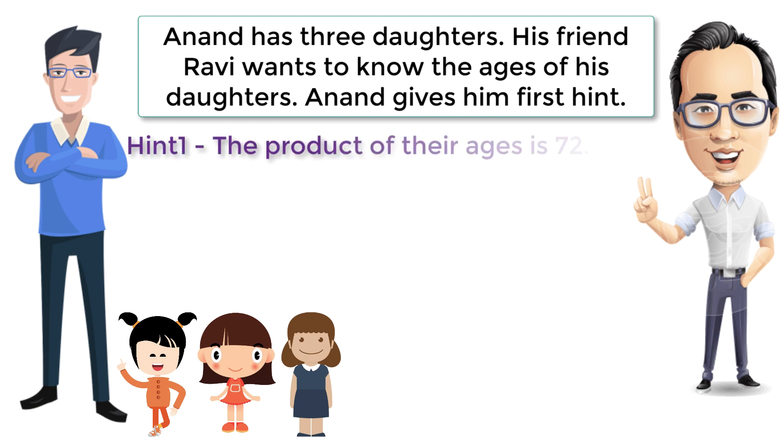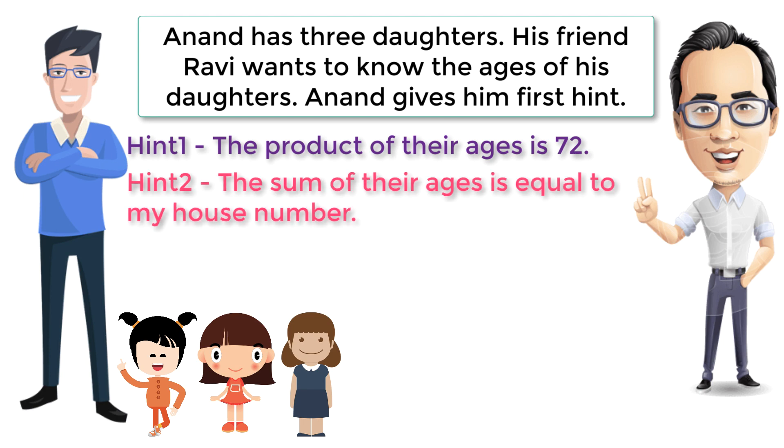Anand gives him the first hint: the product of their ages is 72. Ravi says this is not enough information. Then Anand gives him a second hint: the sum of their ages is equal to my house number.